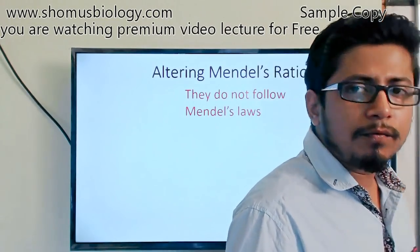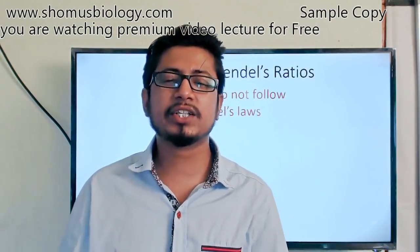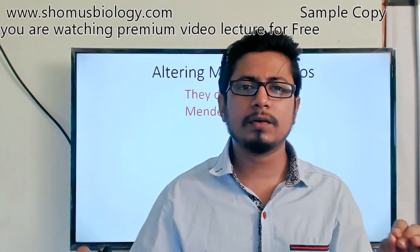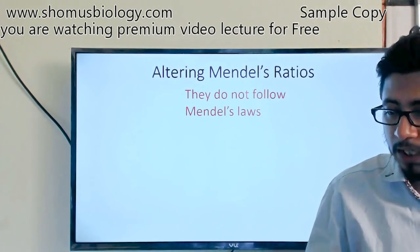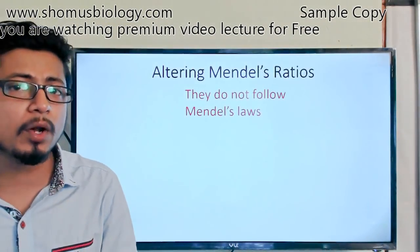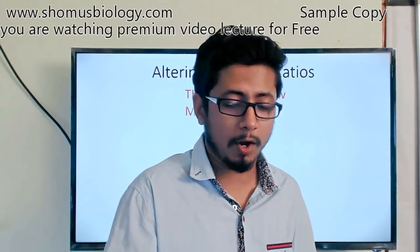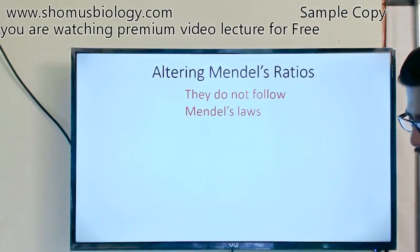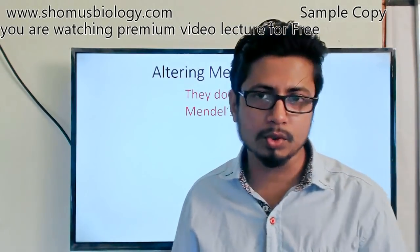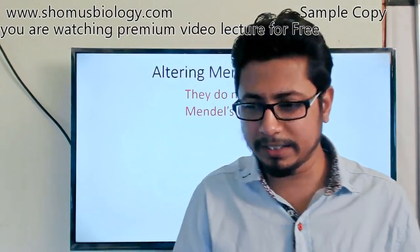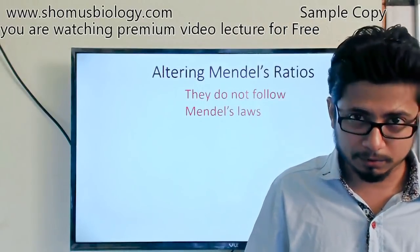For a dihybrid cross involving two separate characteristics, the phenotype ratio changes to 9:3:3:1. Any inheritance that follows this 9:3:3:1 ratio is obeying Mendel's law and is called Mendelian inheritance. Any inheritance pattern that does not follow this 9:3:3:1 Mendelian ratio is called non-Mendelian inheritance, meaning they have an altered phenotypic ratio.